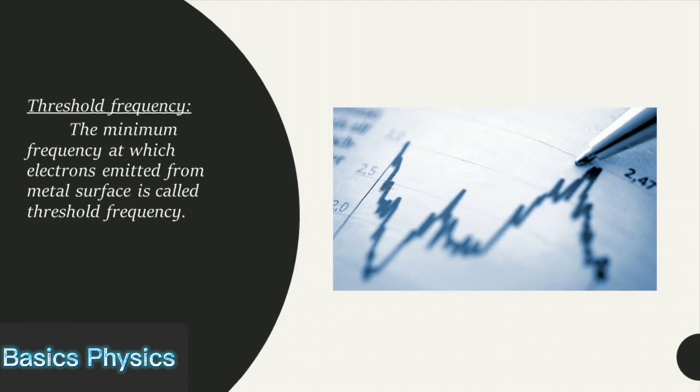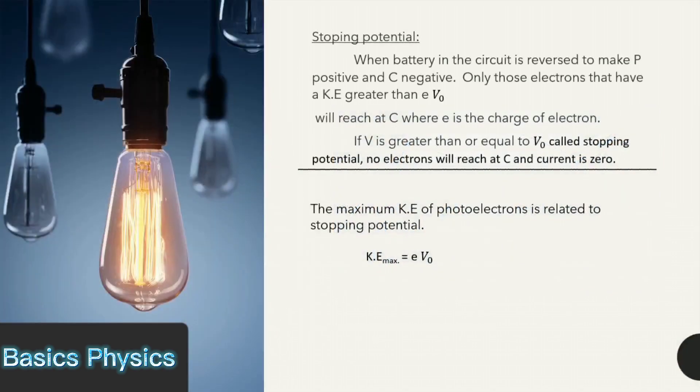When battery in the circuit is reversed to make P positive and C negative, only those electrons that have a kinetic energy greater than eV₀ will reach at C, where e is the charge of electron. If V is greater than or equal to V₀, called stopping potential, no electrons will reach at C and current is zero.